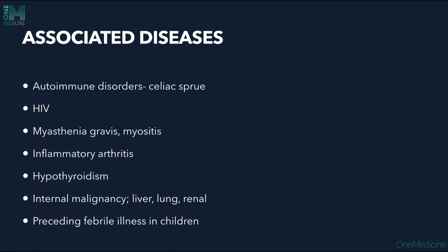Associated diseases include certain autoimmune diseases like celiac disease, HIV, myasthenia gravis and myositis, inflammatory arthritis, hypothyroidism, internal malignancy of the liver, lung or renal system, and preceding febrile illness, mostly in children.